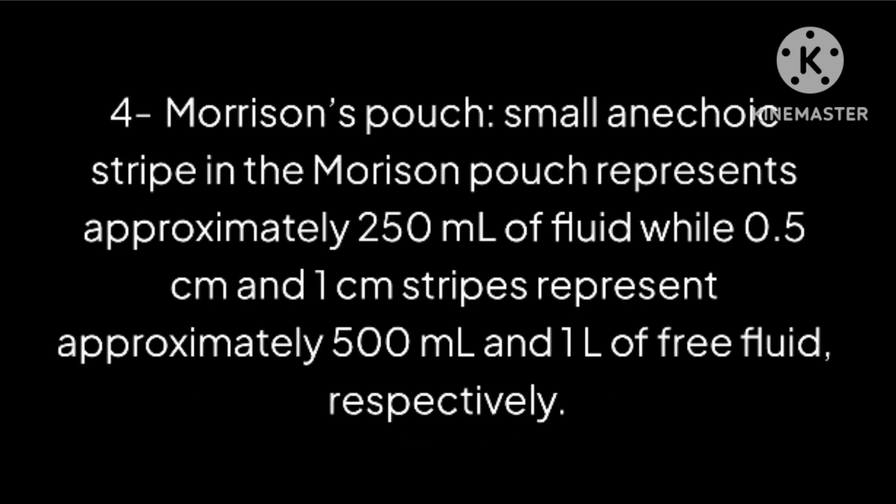Method 4: Morrison's Pouch. A small anechoic stripe in Morrison's pouch represents approximately 250 milliliters of fluid, while 0.5 centimeter and 1 centimeter stripes represent approximately 500 milliliters and 1 liter of free fluid respectively. Width of fluid in Morrison's pouch in centimeters multiplied by 1000 equals volume in cc.